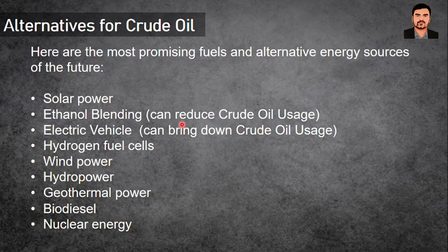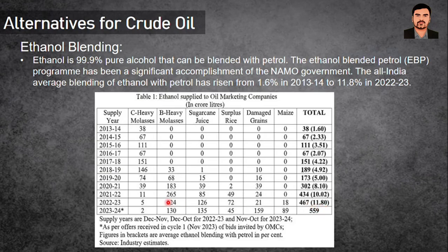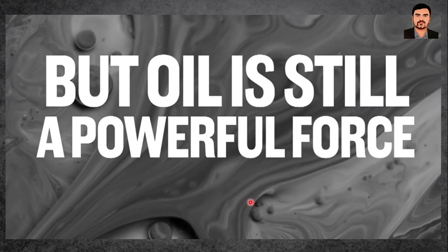Electric vehicles can reduce crude oil usage since they use electricity, where coal is the main power source. The cost of renewables per megawatt generation is coming down gradually. Ethanol blending reducing crude oil import bills can improve our GDP as well. However, oil is still a powerful force and is not going away soon — just like coal. Veterans predict crude oil will last approximately another 53 years, by which time renewable energy is predicted to completely replace it.